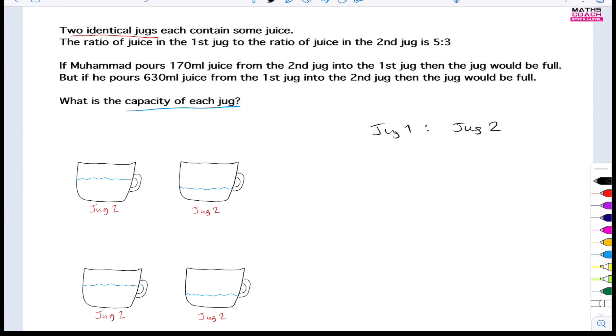It tells me that the ratio of juice in the first jug to the ratio of juice in the second jug is 5 to 3. So let's write this down. We have jug 1 and jug 2, and we know it's in the ratio 5 to 3. What we don't know is how much juice is inside. Now, because I don't know what the total is, I don't know how many parts it's out of, so I'm going to write 5x and 3x. So that's where we're going to begin - we're going to write down this ratio 5x to 3x.